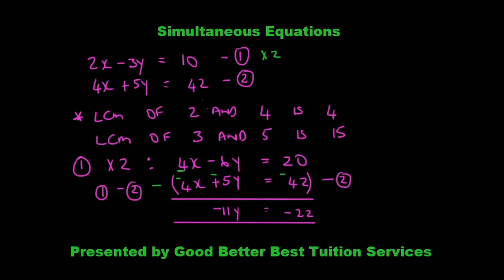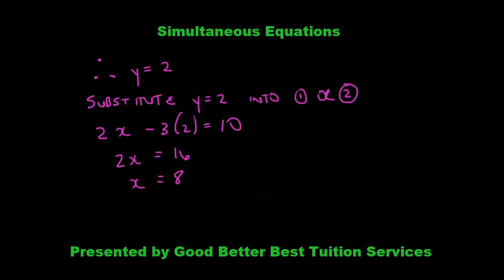Now the coefficients of x are the same. We subtract the two expressions — the minus is in front of the entire second expression, changing all the signs inside: it becomes minus 4x minus 5y and minus 42. That gives minus 11y equals negative 22, therefore y equals 2. Substituting y equals 2 into either equation gives x equals 8. Don't forget to always write down your solution: x equals 8 and y equals 2.